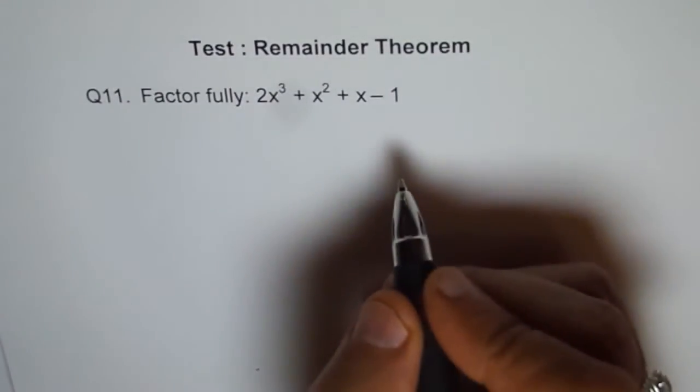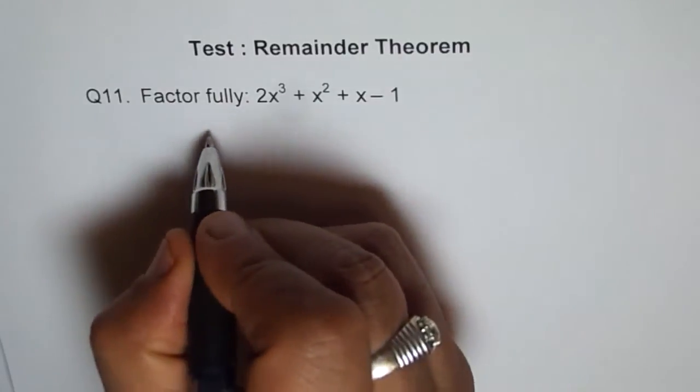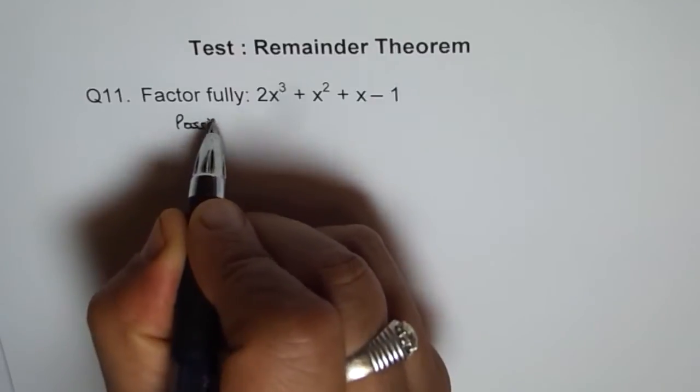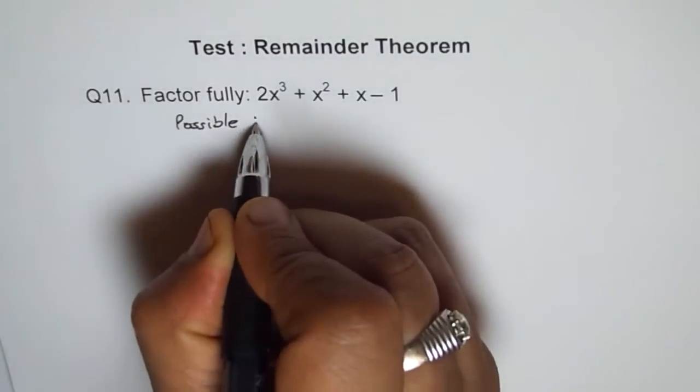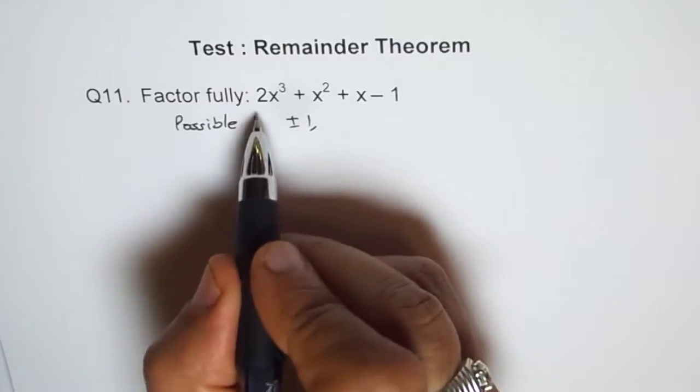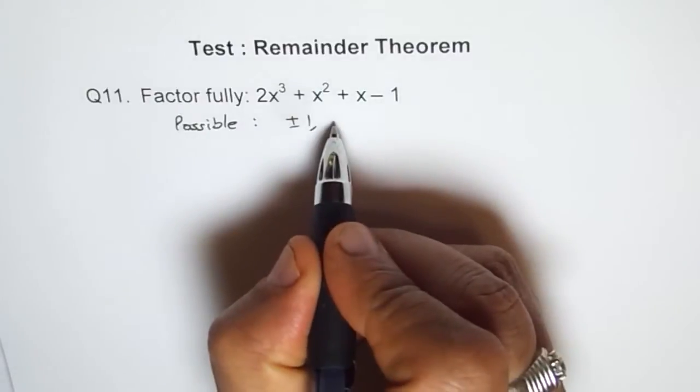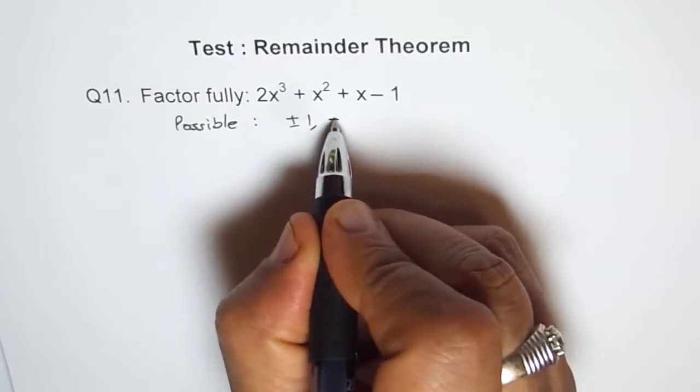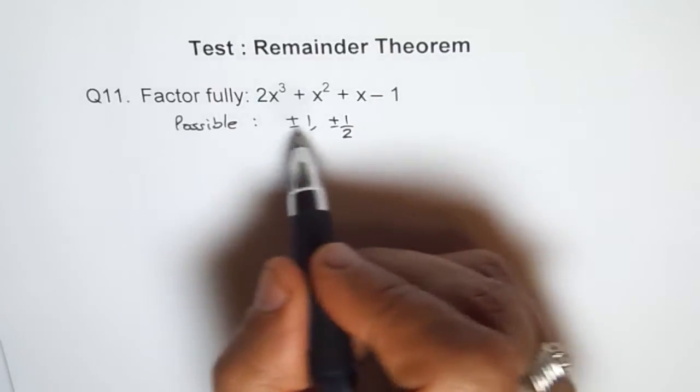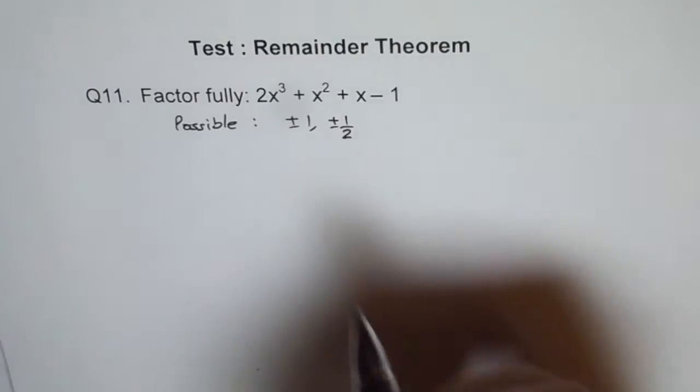Make a list of all the possible factors. For the constant term, the factors could be ±1. And the factors of 2 are ±2 and 1, so we get ratios of ±1/2. These are the combinations. So there are 4 possible combinations.